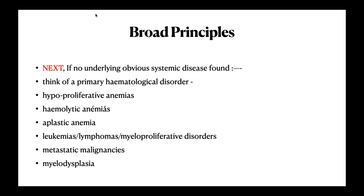If there is no obvious underlying systemic disease, then think of a primary hematological disorder — something wrong in the blood or marrow. This includes hypoproliferative anemias where the marrow is not producing enough RBCs, hemolytic anemias, aplastic anemia, leukemias, lymphomas, malignancies metastasized into the marrow, or myelodysplasia where the marrow becomes dysfunctional. In these diseases, you won't find too many signs or symptoms in other organs apart from lymphadenopathy or hepatosplenomegaly — which are part of the reticuloendothelial system.